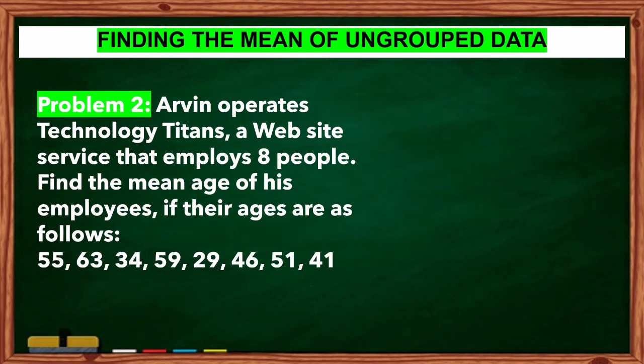Problem 2: Arvin operates Technology Titans, a website service that employs 8 people. Find the mean average of his employees if their ages are as follows: 55, 63, 34, 59, 29, 46, 41, and 51.